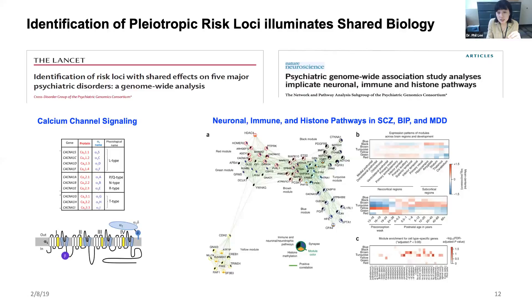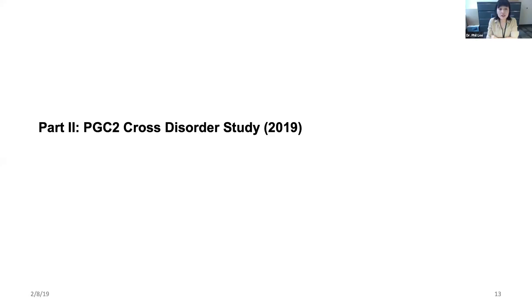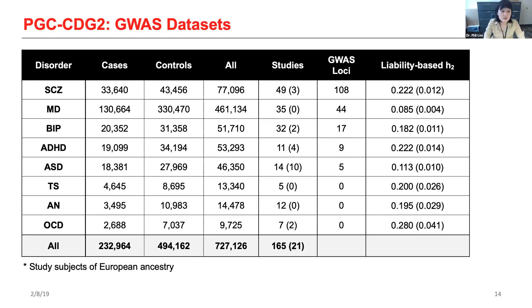Identification of these pleiotropic risk loci also led to the discovery of specific genetic risk mechanisms with a shared etiologic role across a range of disorders studied. Notable examples include the discovery of calcium channel signaling genes and also the role of neuronal, immune, and histone pathways reported by the PGC network and pathway analysis group. In the PGC-2 cross-disorder study, we aim to expand upon prior cross-disorder studies by including a broader range of clinically distinct disorders. This table summarizes the eight disorder datasets we included: schizophrenia, major depression, bipolar disorder, ADHD, ASD — the five PGC-1 disorders but now with increased sample sizes — plus three new disorder datasets: Tourette syndrome, anorexia, and OCD.